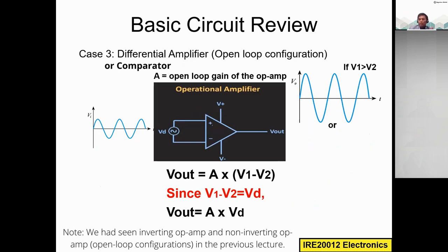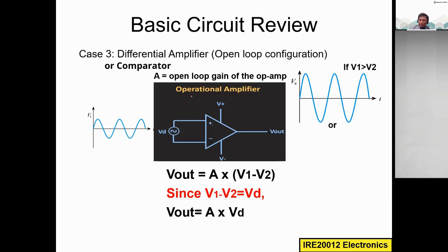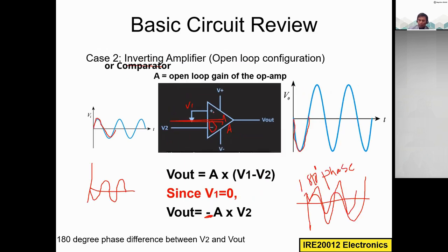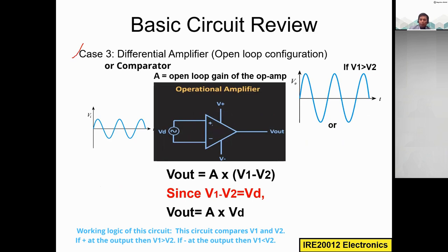We now know two types of configurations: inverting amplifier with open loop and non-inverting amplifier with open loop. Now we will see one more case. In the previous circuits, I applied input to either the positive or negative terminal and grounded the other. But here, I apply input to both terminals — for example, V1 to the positive terminal and V2 to the negative terminal. The op-amp has a gain A, and the formula is: V_out = A × (V1 - V2), which is the difference between V1 and V2.